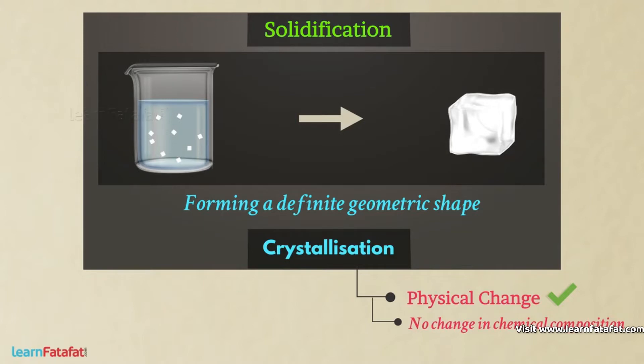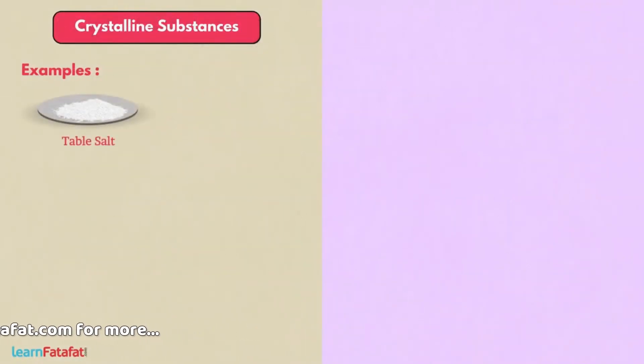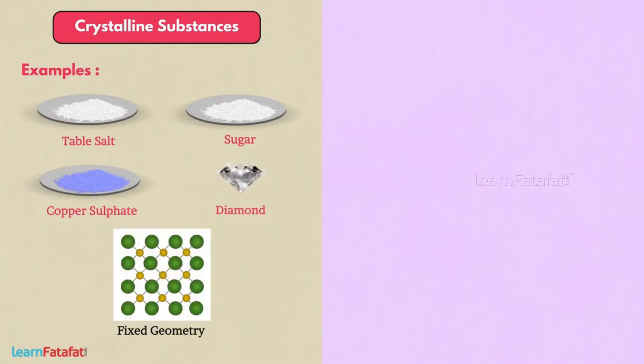The substances which are formed by crystallization are crystalline substances. Examples are table salt, sugar, copper sulphate, diamond etc. They have fixed geometry.